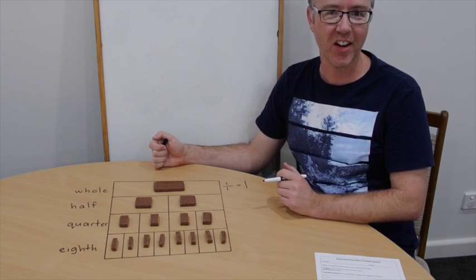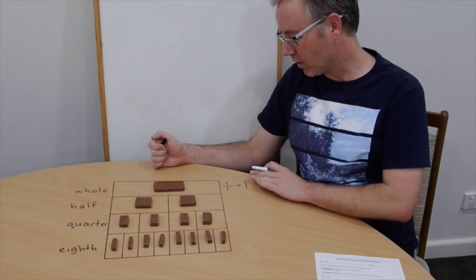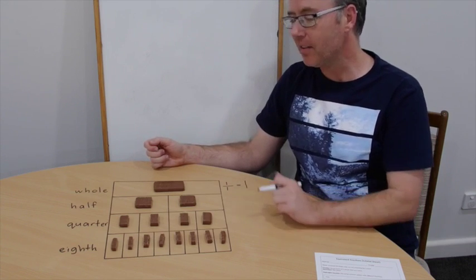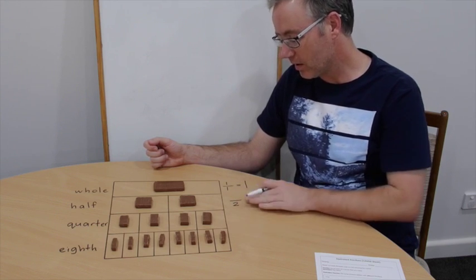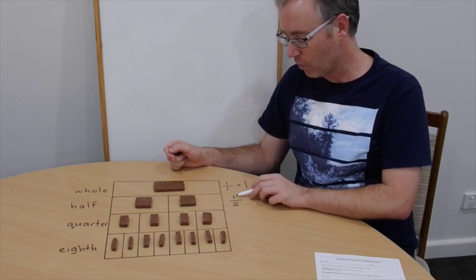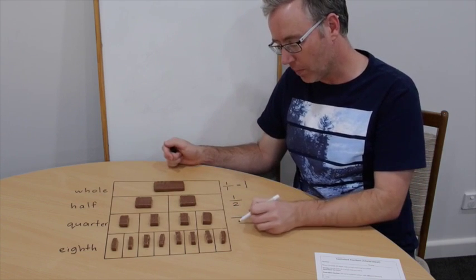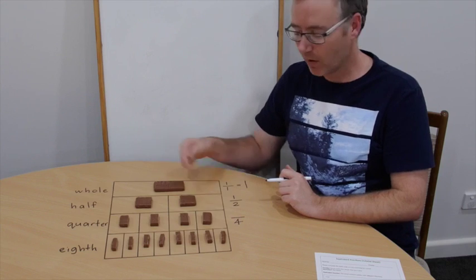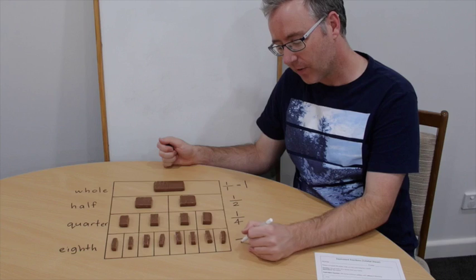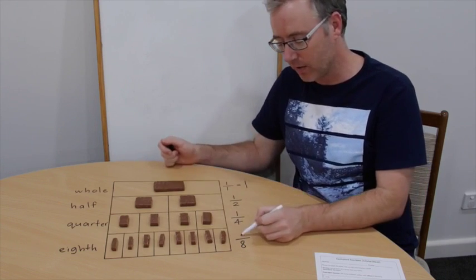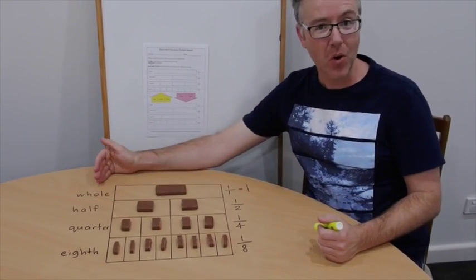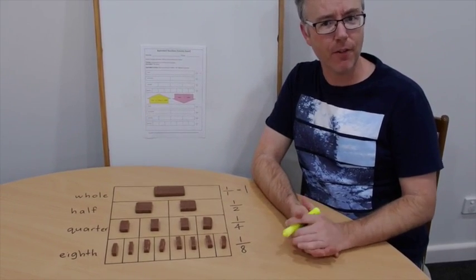If you look at an earlier fractions video I did, you'll notice I talk about whole numbers and different ways we can represent them in fractions — please go back and have a look if you're unsure. When I've divided that whole into two equal parts, the denominator is now two, and if I had one, I would have one half. Because there are four equal parts, the denominator is four — one quarter. And with eight equal parts, I have one eighth. So now we understand how to write fractions and what to call them.